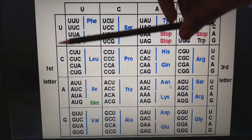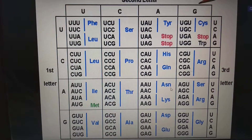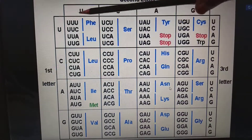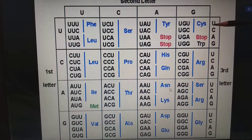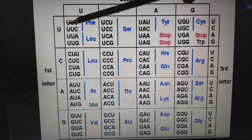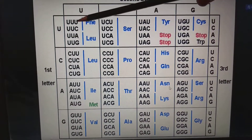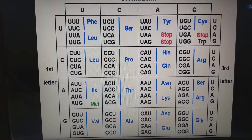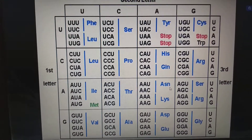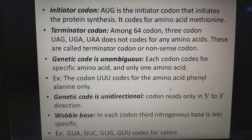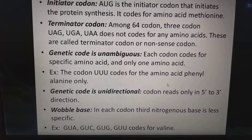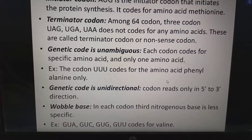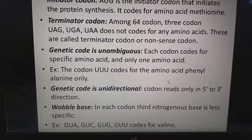Looking at the genetic code table, we have the first letter, second letter and third letter columns. For example, first letter U, second letter U, third letter U codes for phenylalanine and leucine. The initiator codon AUG initiates the protein synthesis and codes for the amino acid methionine.